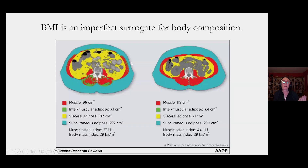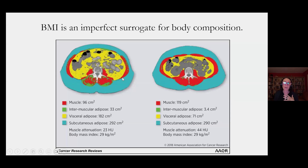Here is another way to look at it — a CAT scan slicing through the abdomen. These are two people with the same BMI, which is a measure of your height and weight. A lot of doctors use BMI to decide if a person is obese, but BMI is an imperfect measure because these two people have the very same BMI. This patient has a lot of muscle mass — the red is muscle — and not as much adipose tissue in the visceral area. This patient has a lot of fat around their internal organs, or visceral adipose tissue, and less muscle mass, and the muscles they do have have fat going through them — a kind of marbling, like a steak — which is also metabolically very unhealthy.